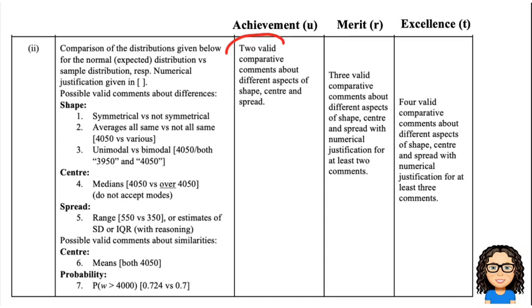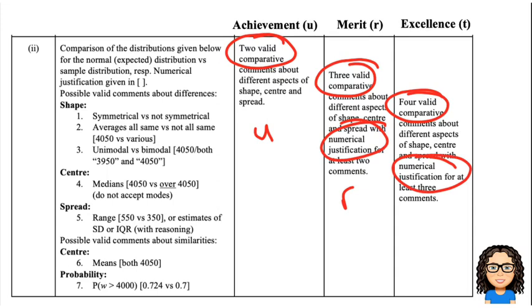So in terms of marking, two comparative comments gets you through to the achieved. Three comments, and that must have numerical justification, that gets you through to merit. And four comments, including numerical justification, gets you through to your excellence.